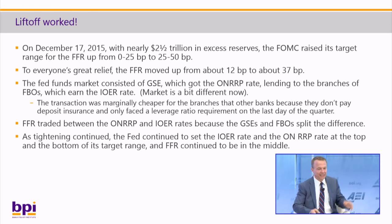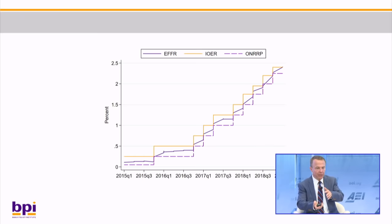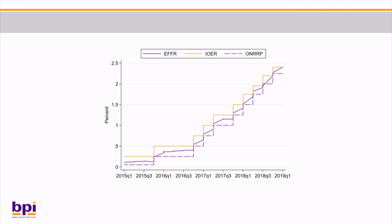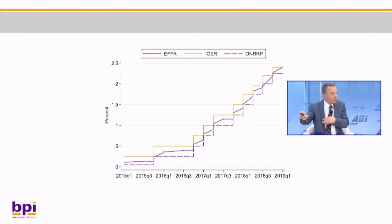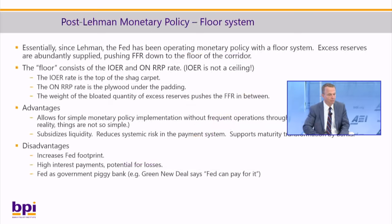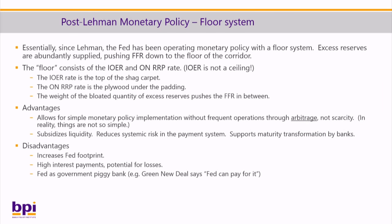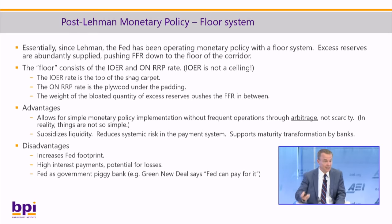As the tightening continued, the Fed continued to lift the IOER rate and the overnight RRP rate, and the federal funds rate traded in the middle. Importantly, if you notice on the very right of the chart, that's not quite true at the end — the effective funds rate has moved up to and maybe even a little bit above IOER. The Fed was conducting policy in a floor system: excess reserves were abundantly supplied, pushing the federal funds rate down to the floor. The floor consisted jointly of IOER and the overnight RRP rate. Think of IOER as the top of the shag carpet and the overnight RRP rate as the plywood under the padding.